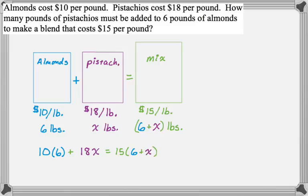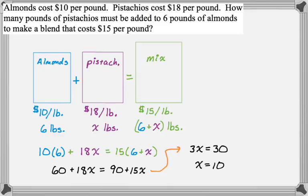If I work this out, this will tell me how much I need to add. Let's do the math. 60 plus 18x equals 90 plus 15x. Everything with an x on one side, everything without on the other gives me 3x equals 30. So x is 10. Go back and make sure you actually answered the question. To answer this question, I want to add 10 pounds of pistachios.